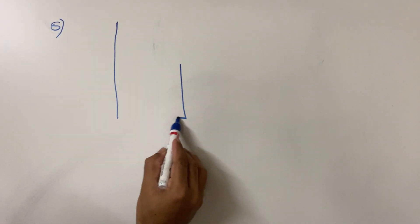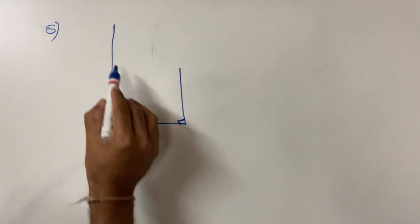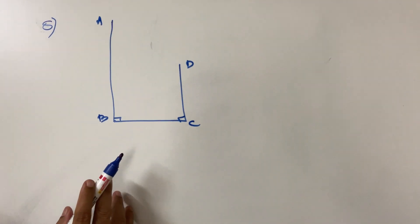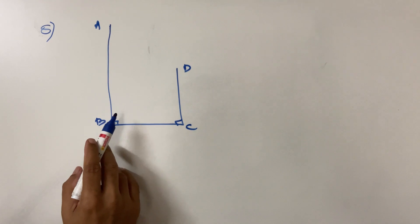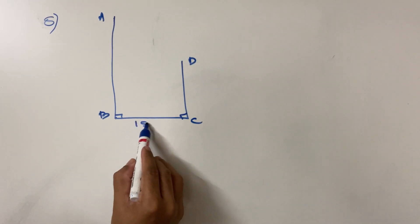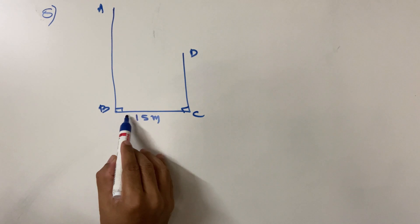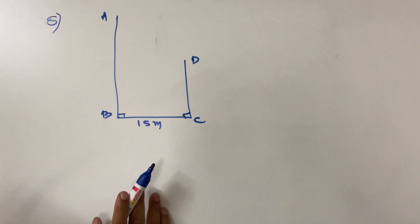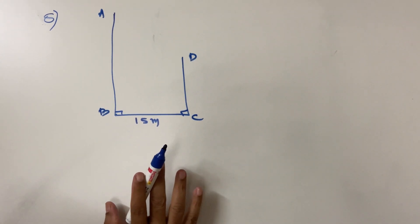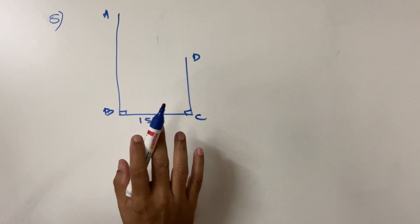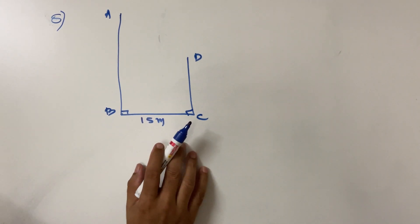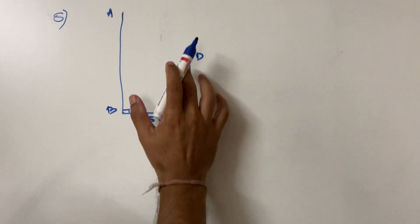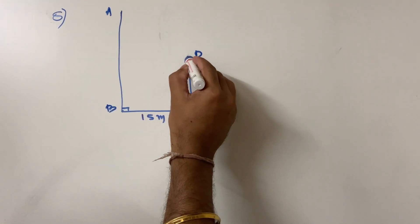Two buildings are in front of each other — one taller building and one smaller building. This has two buildings: AB and CD. The road between them is 15 meters wide. From the top of the first building having a height of 12 meters, the angle of elevation and depression are given.